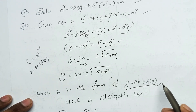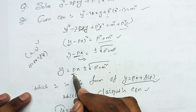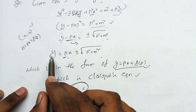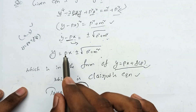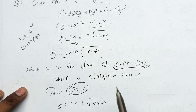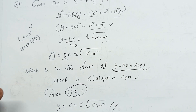So the complete solution is y equals Cx plus or minus root over C squared minus m squared. The Clairaut equation is very easy and simple.